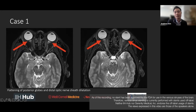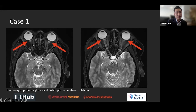You can see that there's some flattening right there, as well as the optic nerve sheaths, which look like they are probably a little dilated distally. You can see the optic nerve, which is a little darker in signal, and there's brighter T2 signal surrounding that optic nerve, representing the CSF.